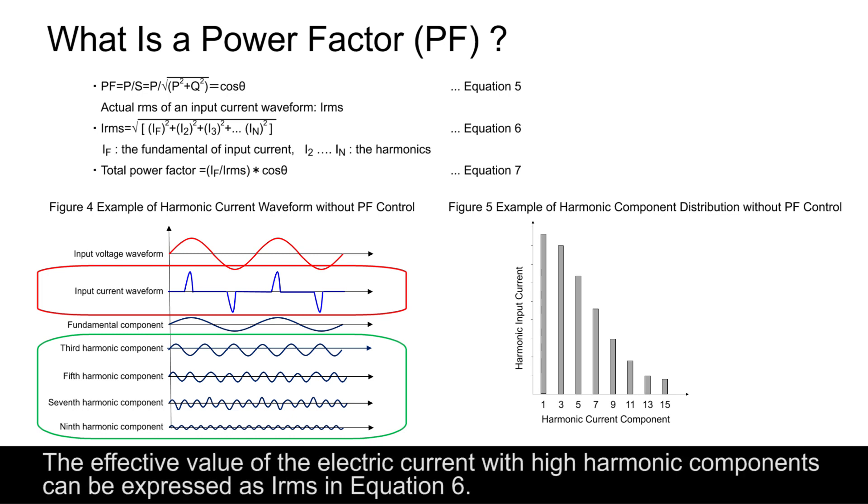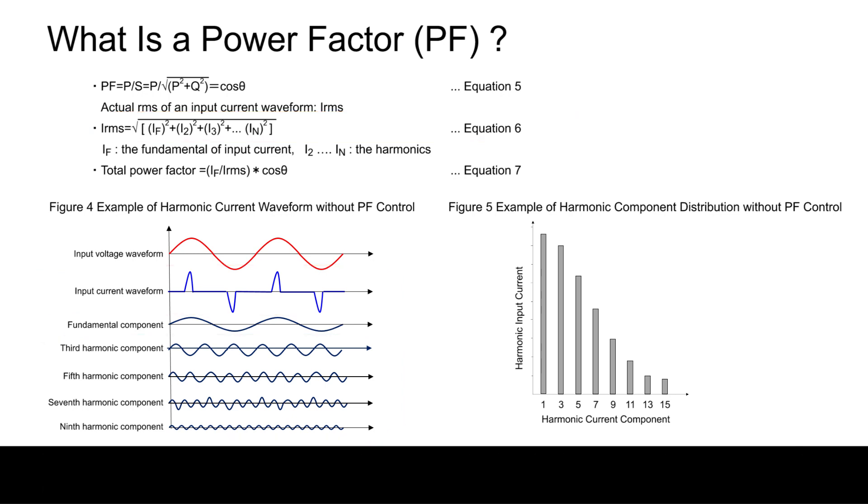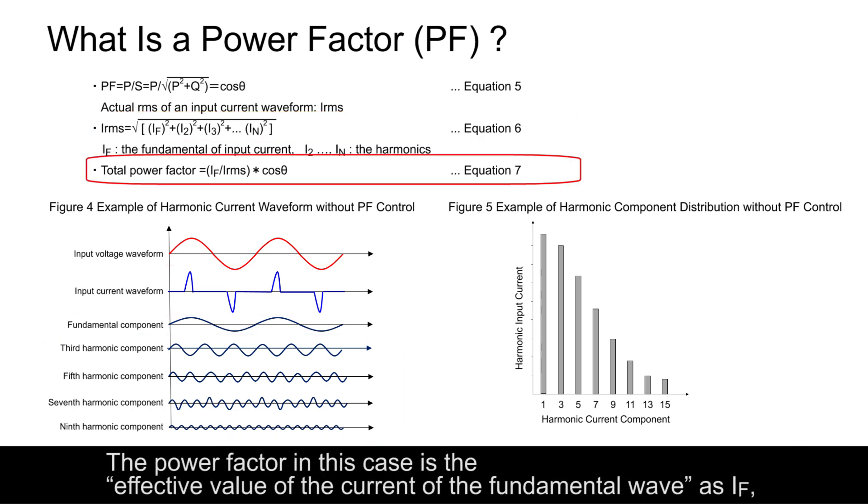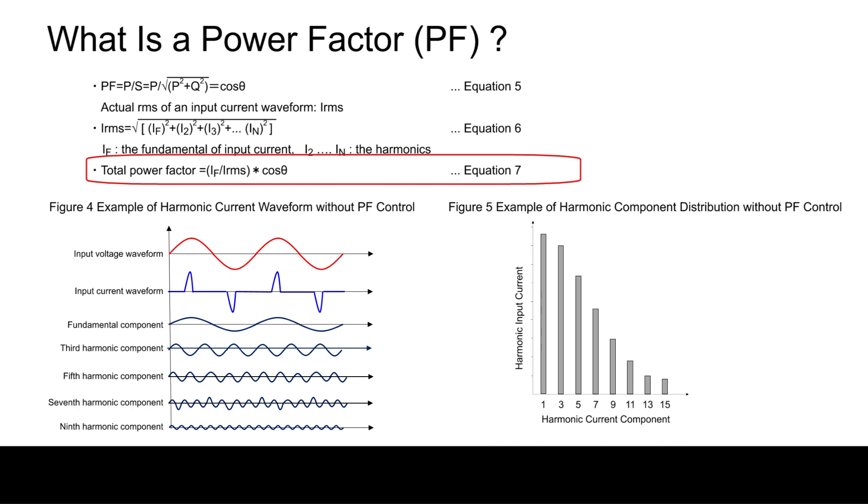The effective value of the electric current with high harmonic components can be expressed as IRMS in equation 6. The power factor in this case is the effective value of the current of the fundamental wave as IF divided by IRMS times the power factor cosine of the fundamental. This is called the total power factor.